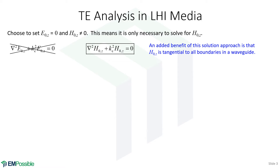Let's set up analysis for TE modes. TE modes is transverse electric — that means the z component of the electric field is zero, but not the z component of the magnetic field. We had two differential equations: one defined the z component of E, the other defined the z component of H. But if our z component of E is zero, we just take the zero solution of that differential equation and ignore it. We're not solving this one, so we really only have one equation to solve — for the z component of the magnetic field.